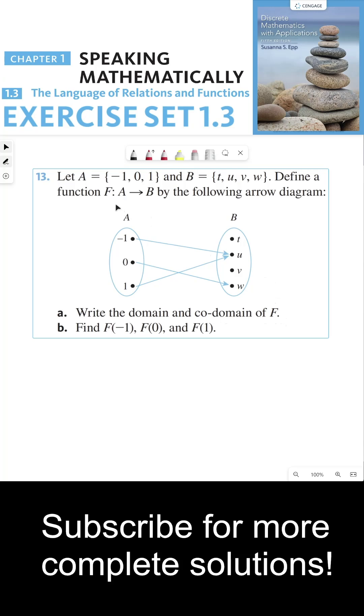This is pretty straightforward because whenever you have this notation here, F colon A arrow B, the first set here, right before the arrow, is my domain, and this set B is my codomain.